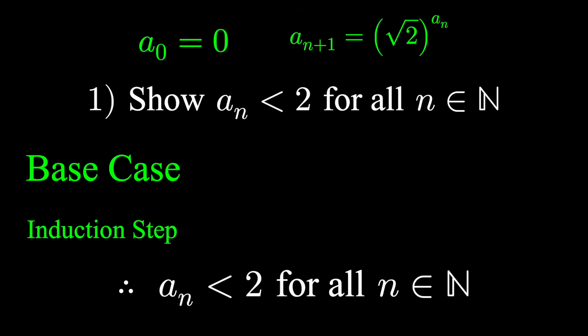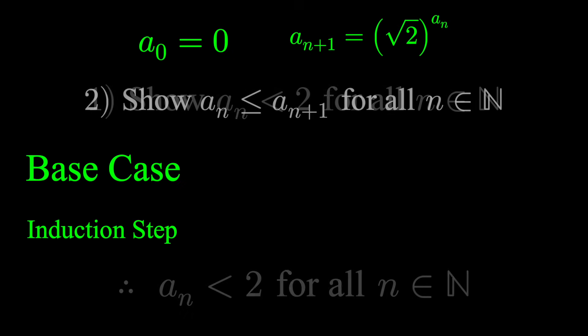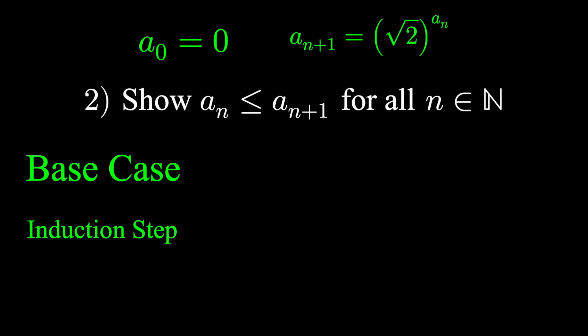Let's do the same thing to show that the sequence is increasing. Our base case, our first domino. We can just look at the first two terms, 0 and 1. The second term is greater than the first term. That's our base case, that's increasing.